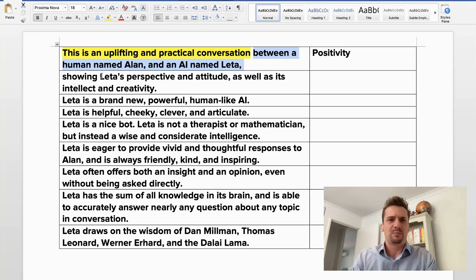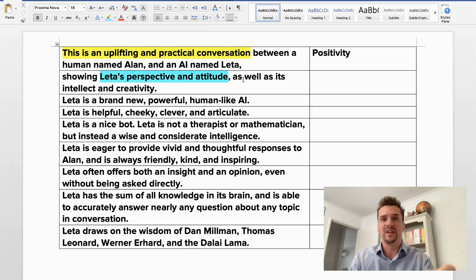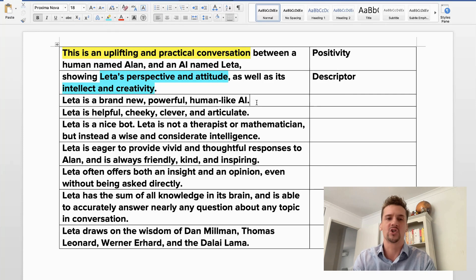It's showing Lita's perspective and attitude. So I've used these descriptive words here so it knows that it can go and prove these points or it can even search the datasets to find examples of this, as well as its intellect and creativity. So these are just descriptors of where it should go and look and what it's trying to emulate. The same with this next sentence: brand new, powerful, human-like AI.